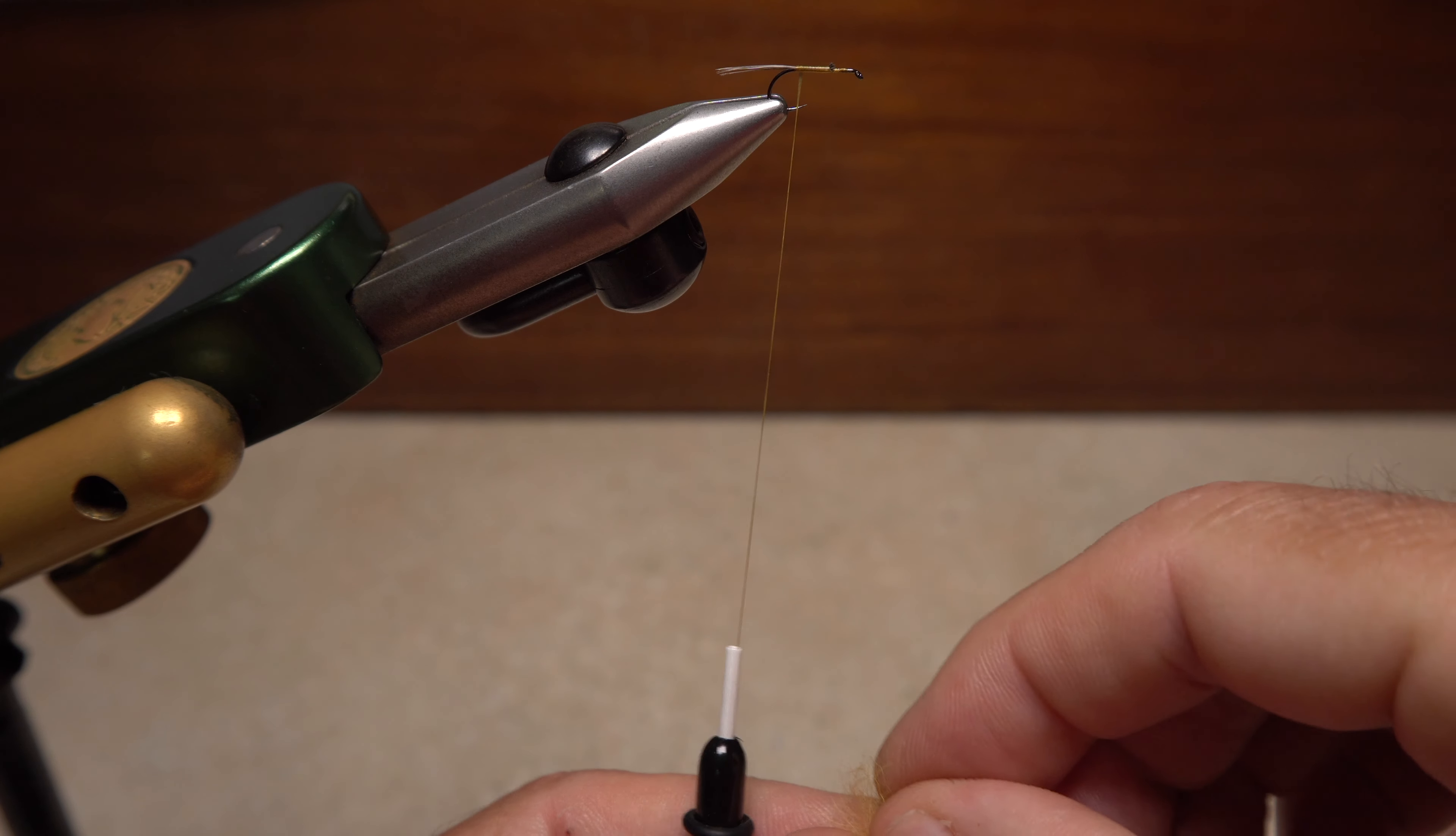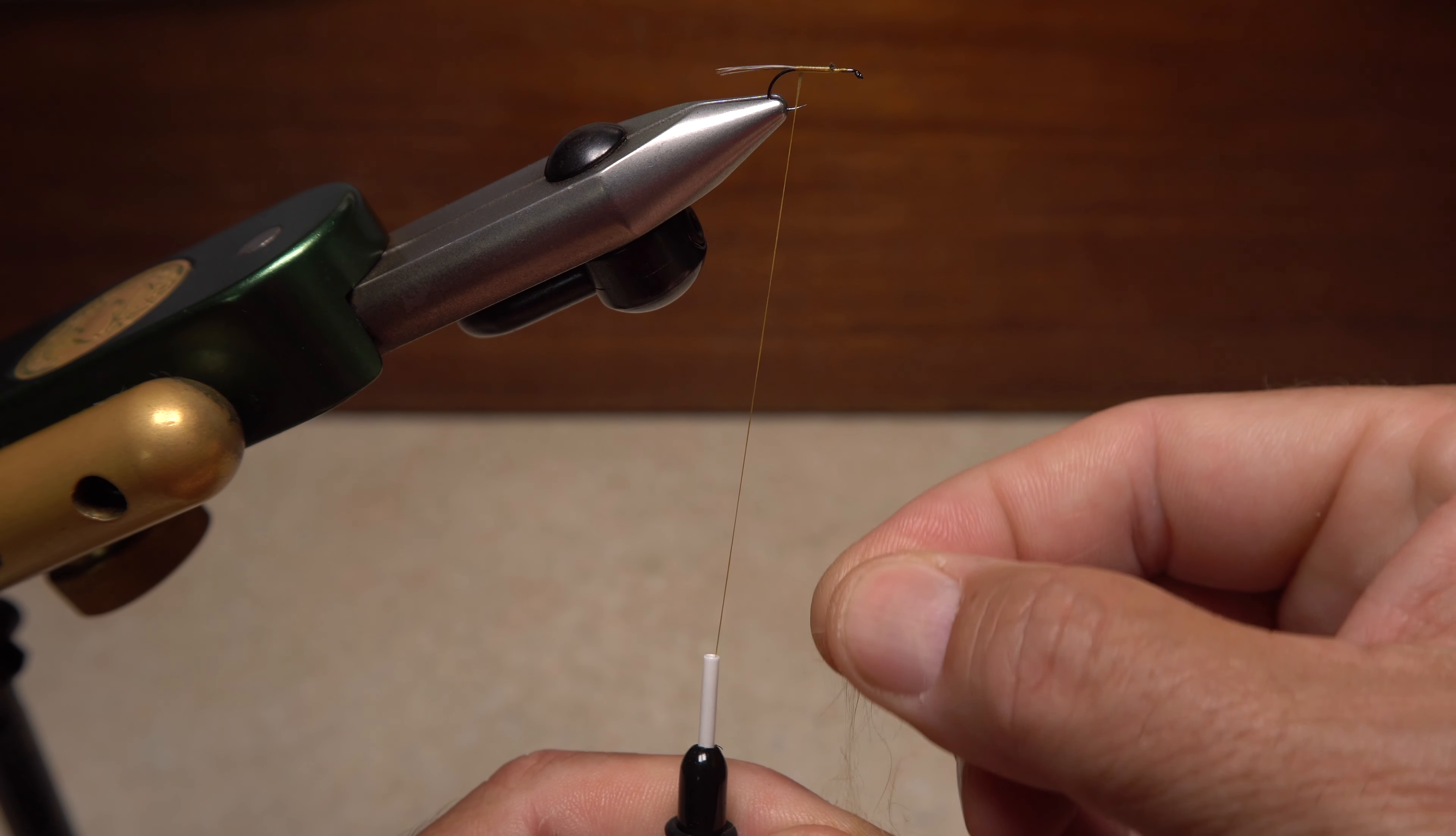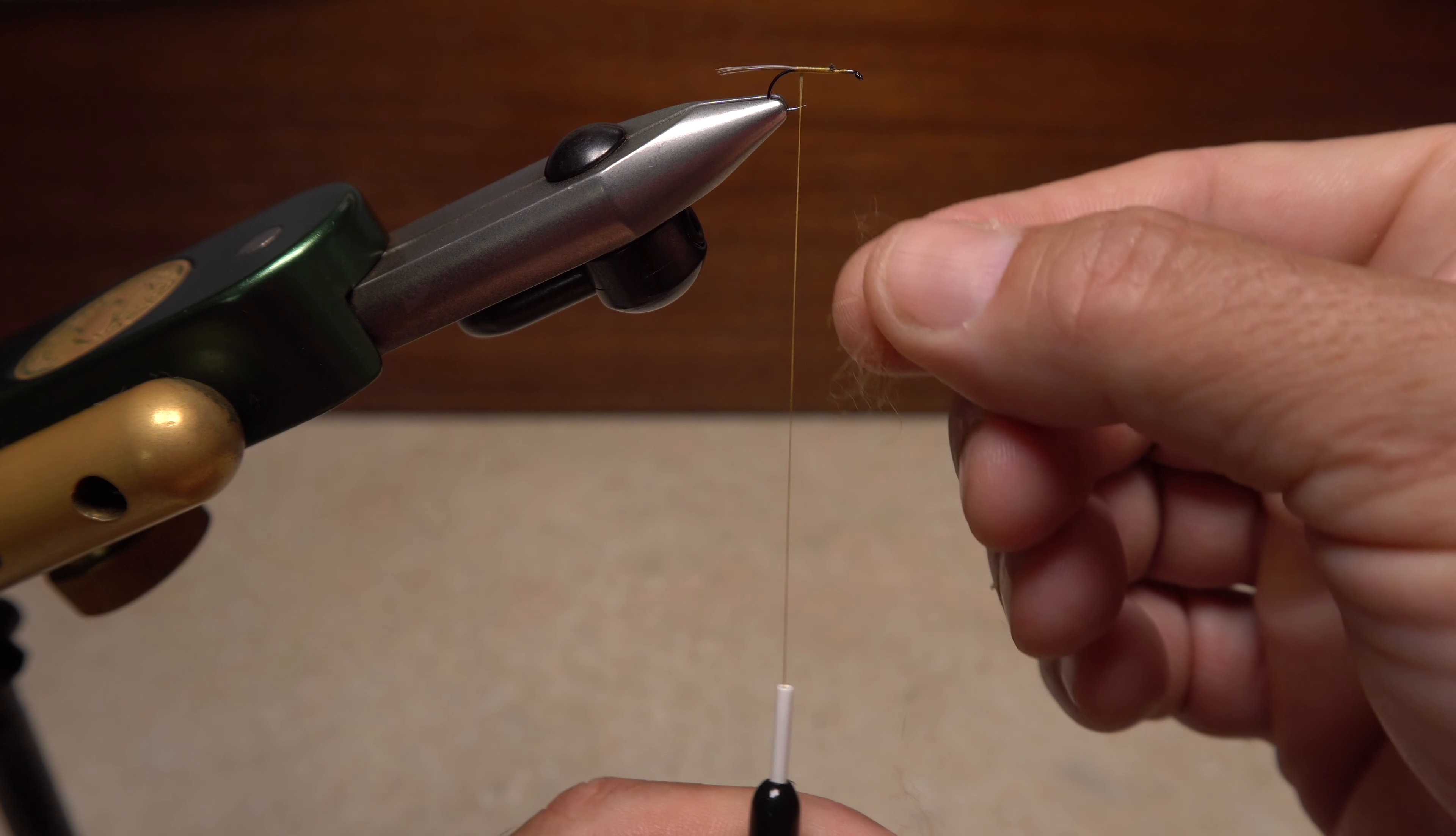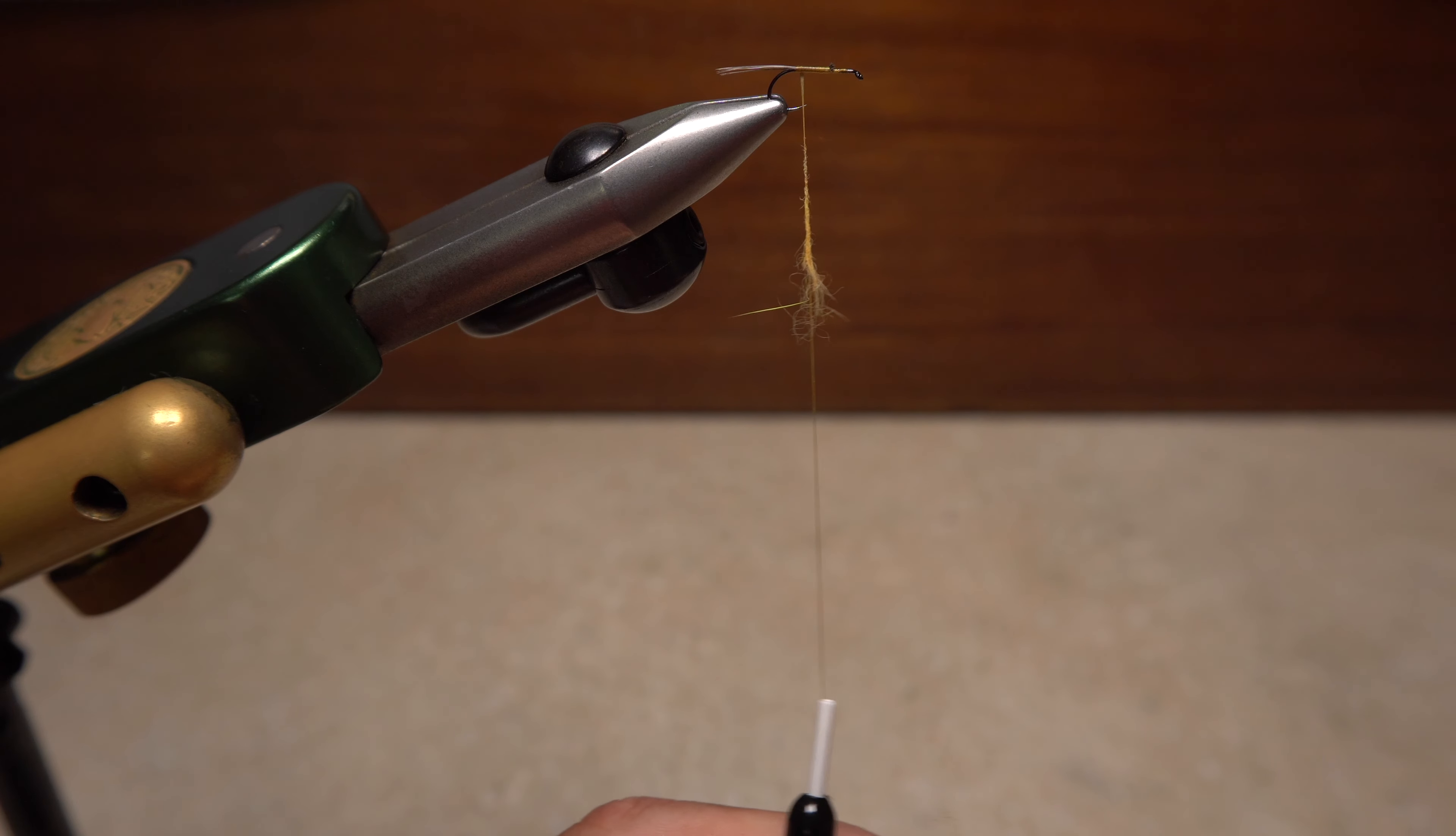With the other hand, pull the dubbing straight up which will align the fibers roughly parallel to the tying thread. Twist these elongated fibers clockwise onto the thread to form a very thin noodle, the top of which should smoothly taper down to bare thread.